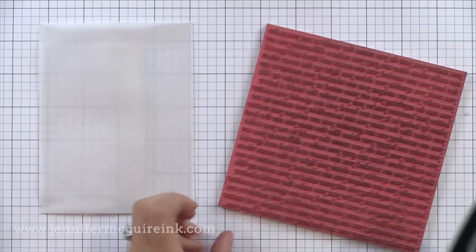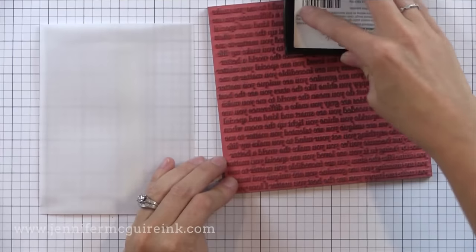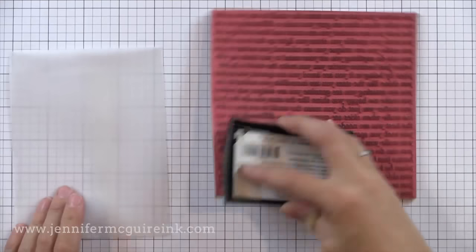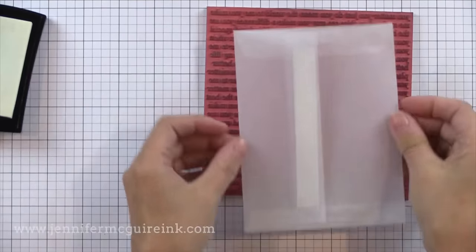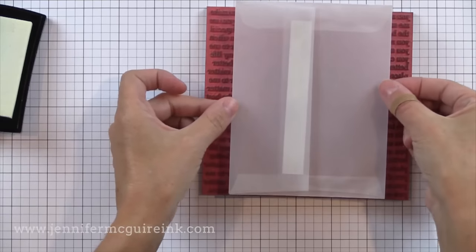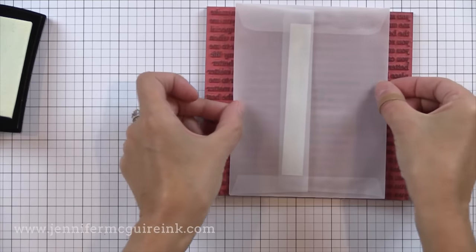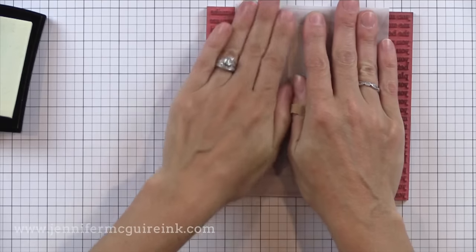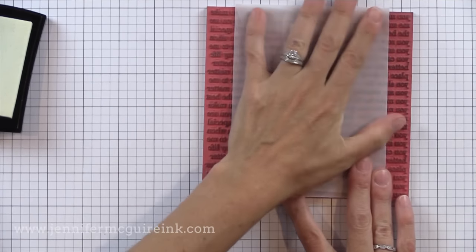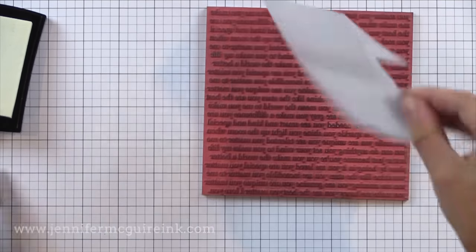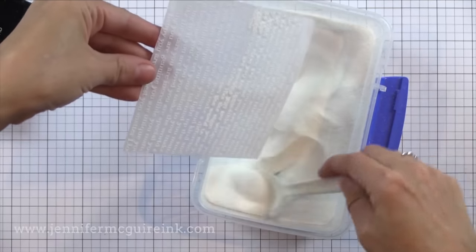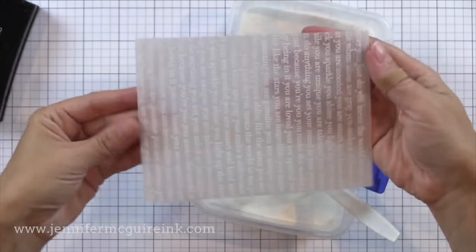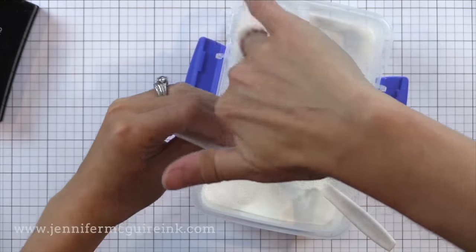I have this background from Simon Says Stamp also. It has a bunch of different messages about how great you are. I thought that would be fun in the background here. I'm inking it up with VersaMark ink and I'm stamping this onto a vellum envelope. This is new from Simon Says Stamp. I love vellum envelopes because you can see the card when the person gets it in the mail. But today I'm going to use it to make a gift bag. So I'm stamping VersaMark ink on it and then I'm going to add Hero Arts white embossing powder. Once I've covered this I went ahead and heat set it so we have a nice bright white stamped image.